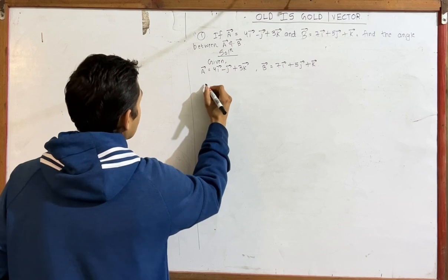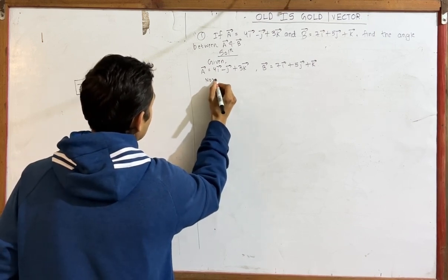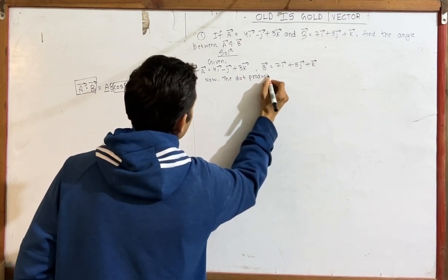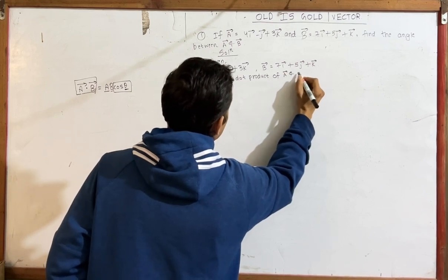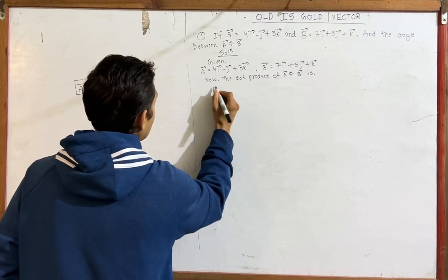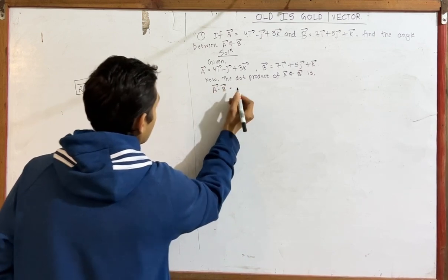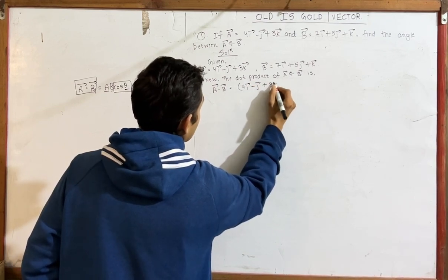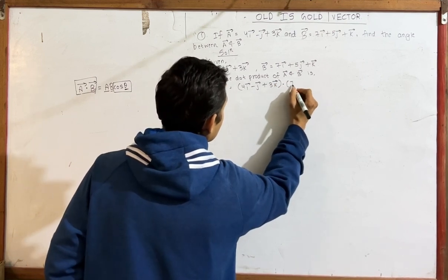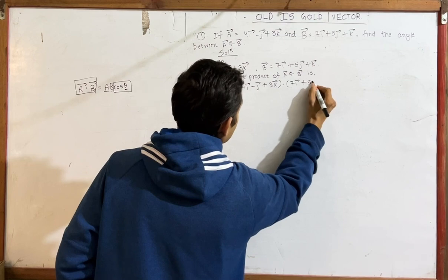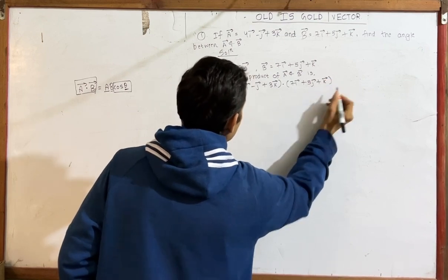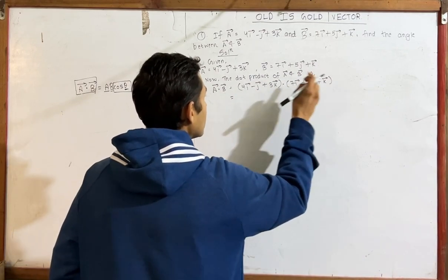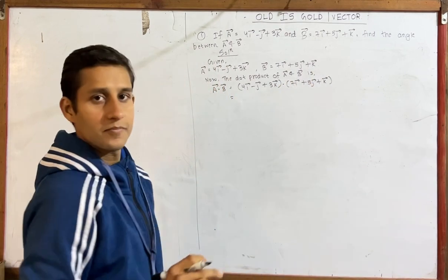Now I will write the dot product. The dot product of A vector and B vector. So A vector dot B vector: we write 4i vector minus j vector plus 3k vector, dotted with 7i vector plus 5j vector plus k vector.